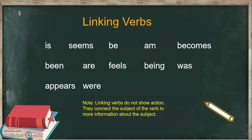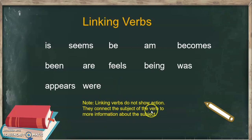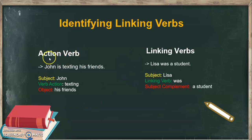I'm sure that you have seen them so many times because every single sentence has them. Please note that linking verbs do not show action. Their only function is to connect — to connect the subject of the verb to more information about the subject. We have two categories: the action verb and the linking verb, and we can compare the difference between them.